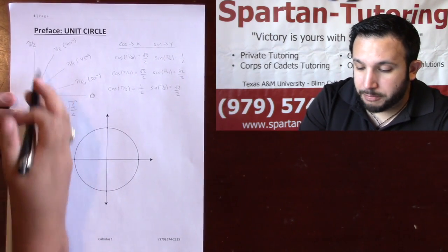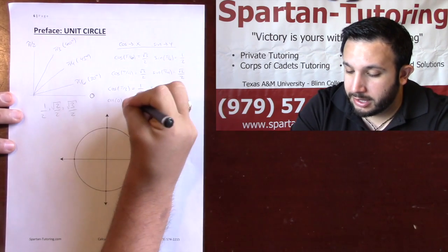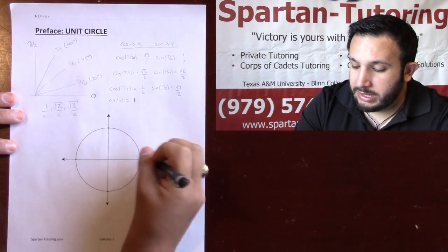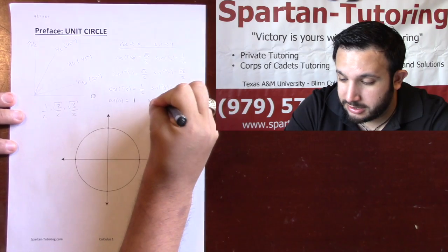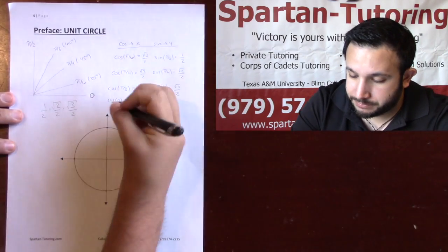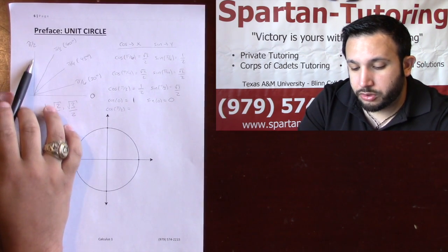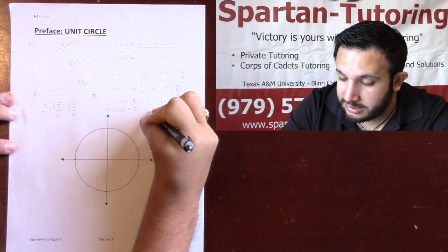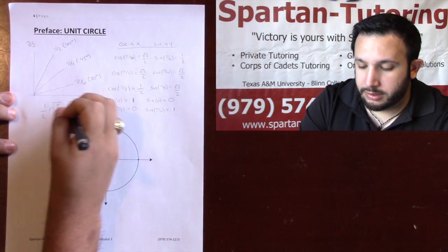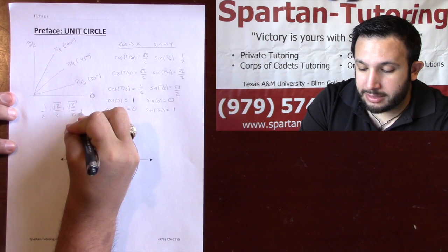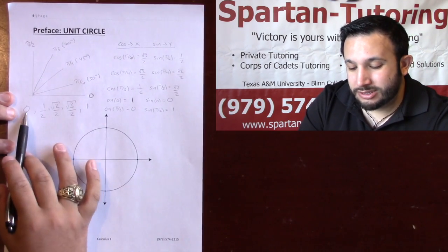For 0 and pi over 2: cosine of 0 is 1, since it's all in the x direction with none in the y — the unit circle means the edge is 1 unit from the origin. Sine of 0 is 0, since you're going 0 in the y direction. Cosine of pi over 2 is 0, as you're not going in the x direction at all. And sine of pi over 2 is 1, since it's all in the y direction. You can think of 1 as square root of 4 over 2 and 0 as 0 over 2 to keep the pattern consistent.